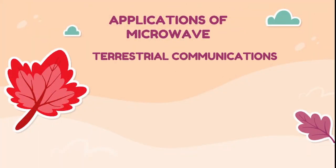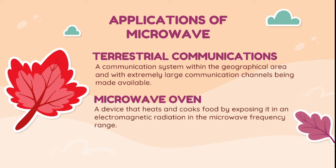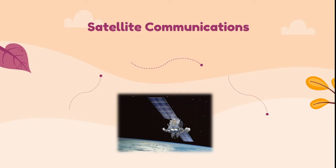Terrestrial communications is a communication system within a geographical area with extremely large communication channels being made available. Microwave oven is a device that heats and cooks food by exposing it to electromagnetic radiation in the microwave frequency range. Have you ever wondered how you are able to receive signals and watch your favorite TV episodes? All thanks to microwave.